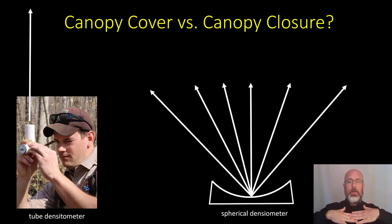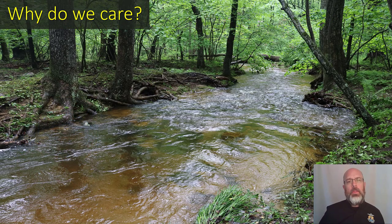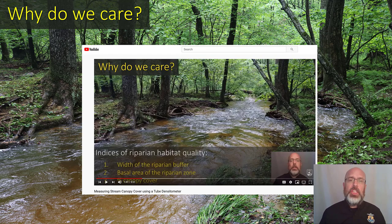The spherical densiometer is a box with a mirror — either concave or convex — that allows you to see a reflection of a wide-angle view of the vegetation above. For a discussion of why canopy cover, canopy closure, and riparian habitat are important, I suggest you go back and look at the video on the tube densitometer, where we talk in detail about the importance of riparian habitat and why these are good measurements.